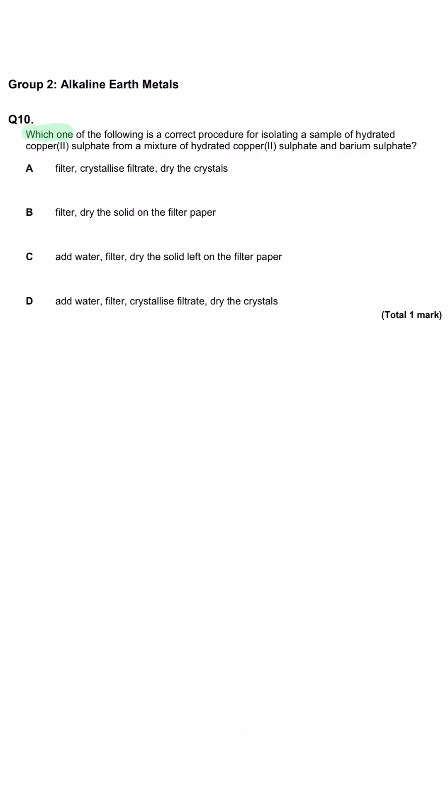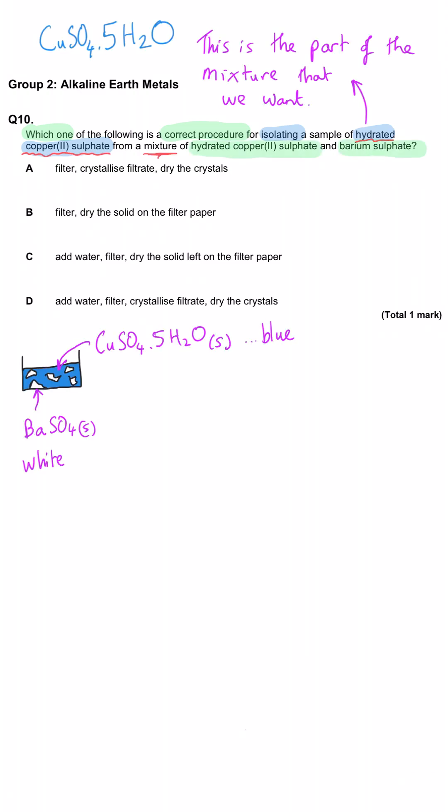Which one of the following is a correct procedure for isolating a sample of hydrated copper 2-sulfate from a mixture of hydrated copper 2-sulfate and barium sulfate? We've not been told anything about the state of these two substances, so we need to assume that they are both solid at the beginning.